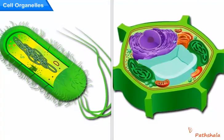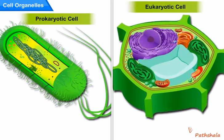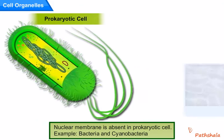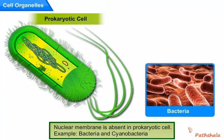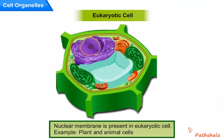Based on the nuclear membrane, cells are of two types, namely prokaryotic cell and eukaryotic cell. Nuclear membrane is absent in prokaryotic cells like bacteria and cyanobacteria. Nuclear membrane is present in eukaryotic cells like all plant cells and animal cells.